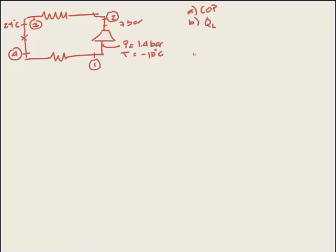So we are asked to get COP and the heat load this system can take. First of all, let's recognize that we have a mass flow rate of 6 kilograms per minute, and we can convert to kilograms per second. One minute is 60 seconds, so that is 0.1 kilograms per second of refrigerant.